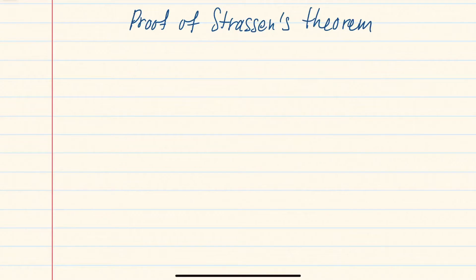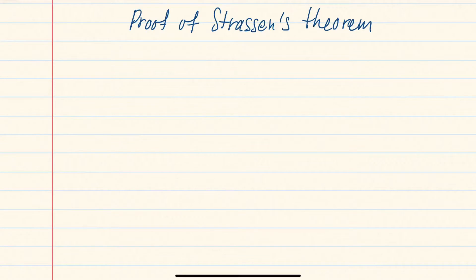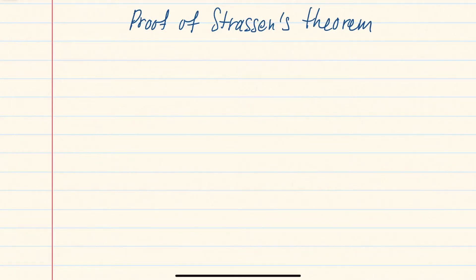In this video we discuss the proof of Strassen's theorem. The proof consists of three parts: the first part contains the main conceptual idea, and the second and third parts are approximation steps that reduce the general case to this conceptual case. This conceptual case is where both probability measures P and Q are concentrated on finitely many points with uniform probabilities 1/n. The proof for these uniform discrete measures is based on a combinatorial result called Hall's marriage lemma.